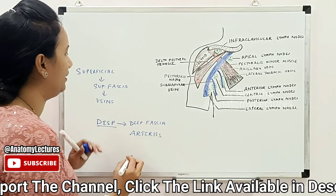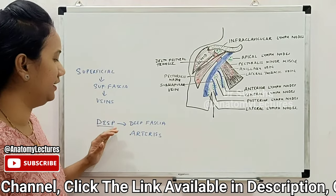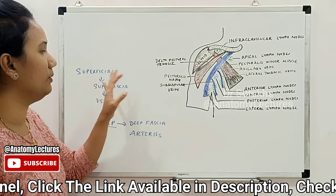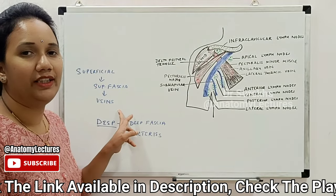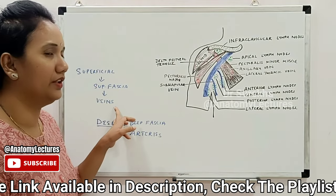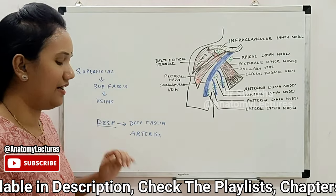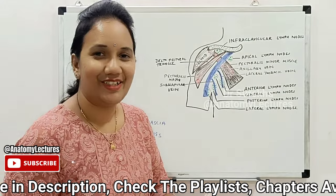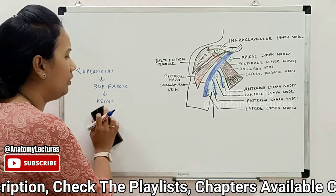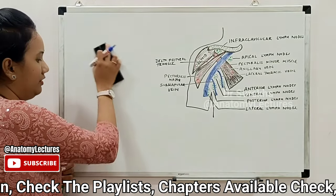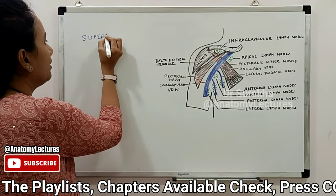So to summarize: in the upper limb, we have a superficial lymphatic group and a deep lymphatic group. The superficial group lies in the superficial fascia and travels along the veins. The deep lymphatics are present deep to the deep fascia and travel along the arteries. We will now discuss the superficial group first.